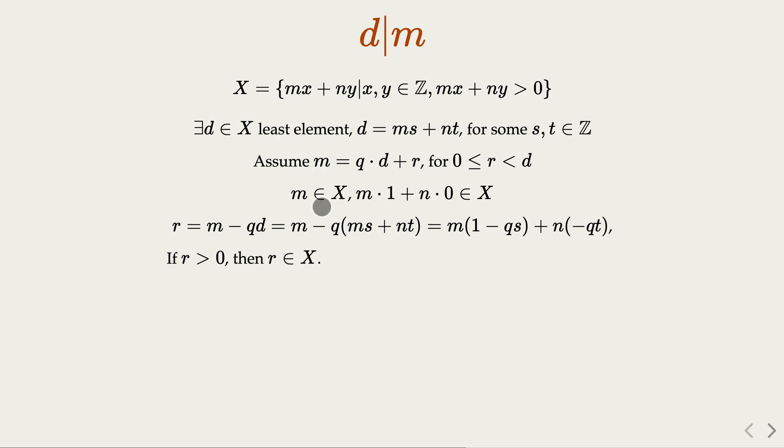But that would be a contradiction because we know that r is smaller than d. In the meantime, d is the least element. That is a contradiction. So which implies r has to be 0,